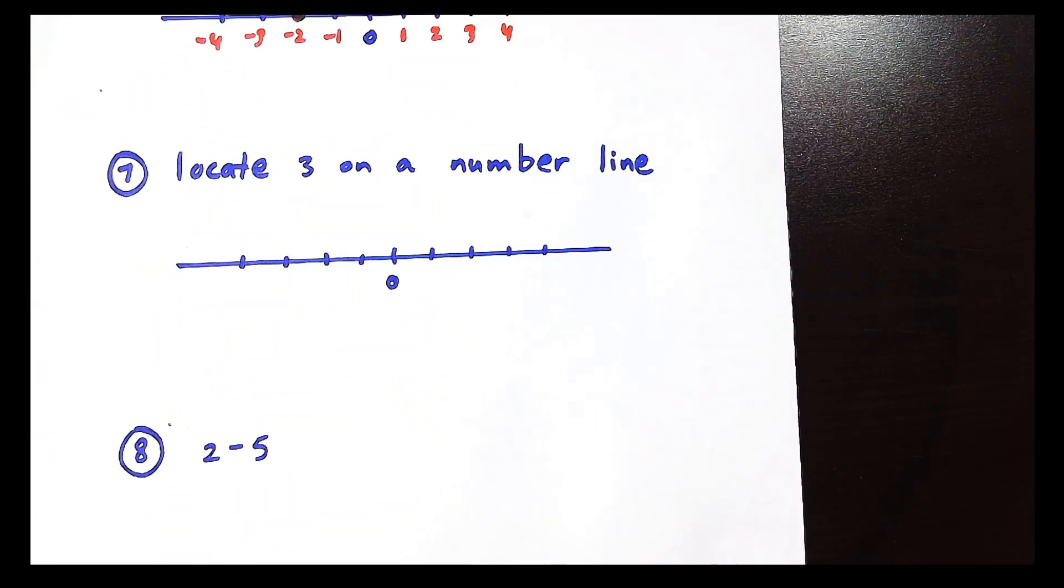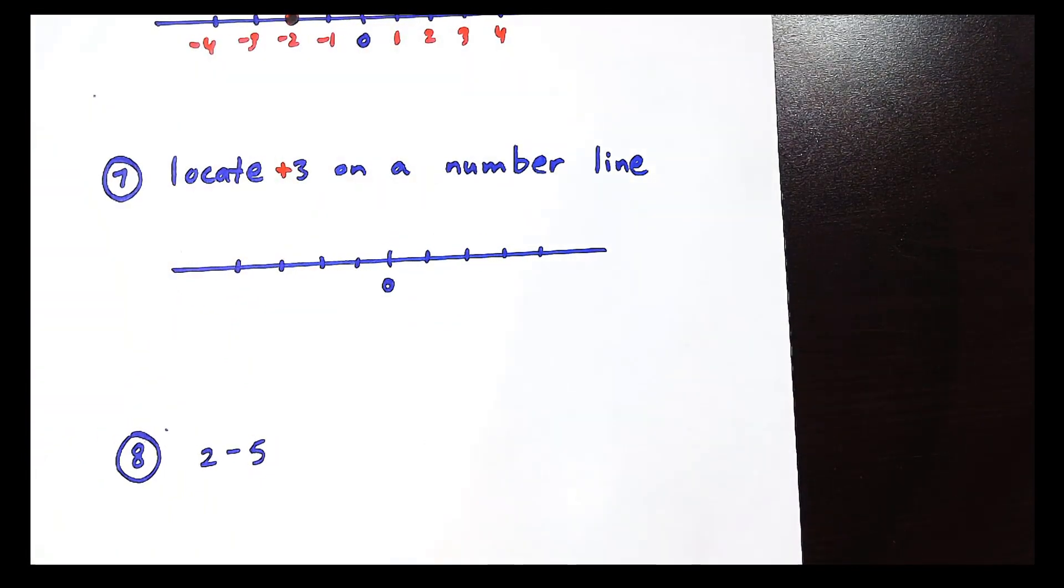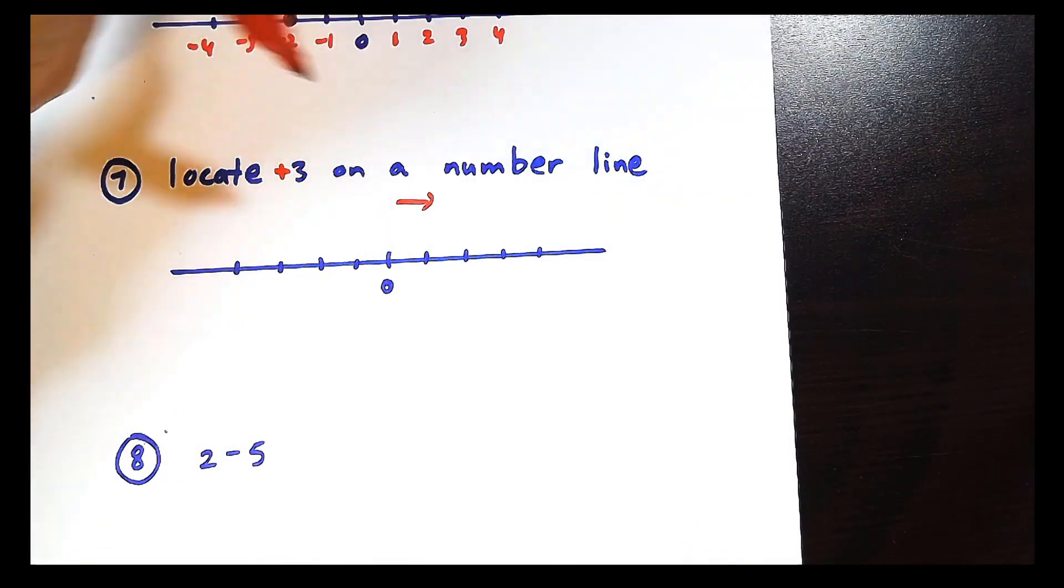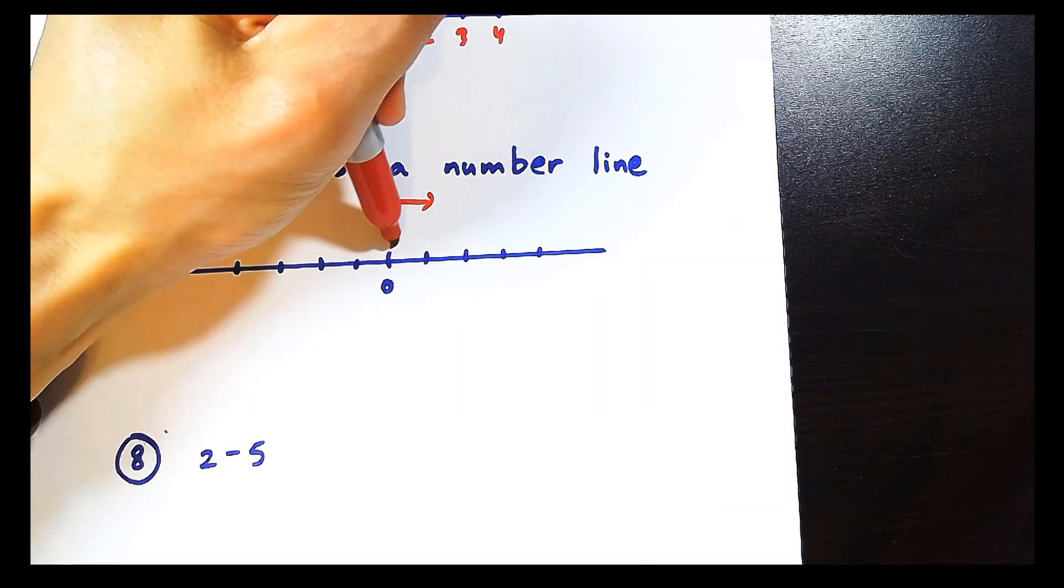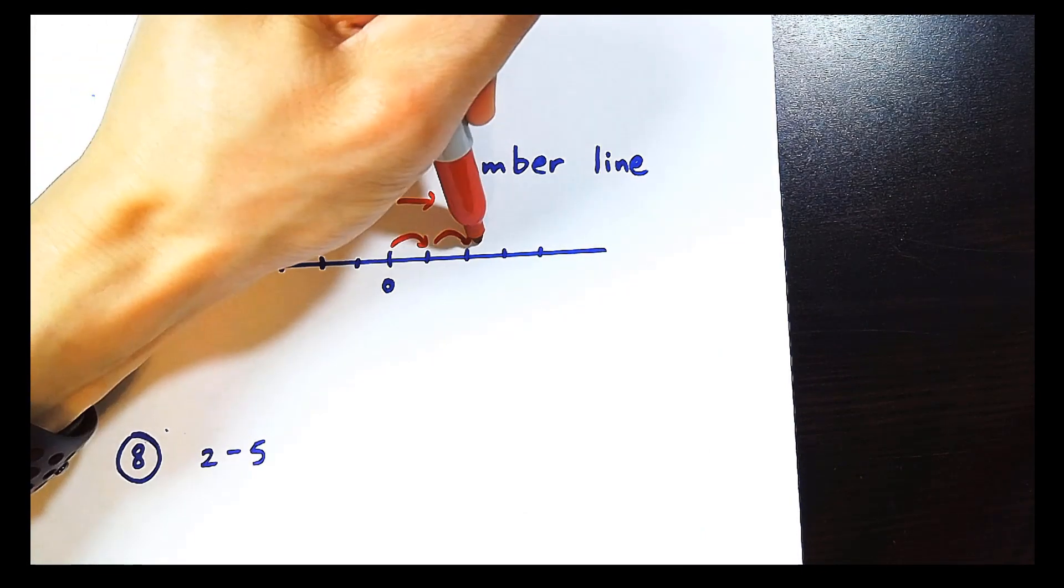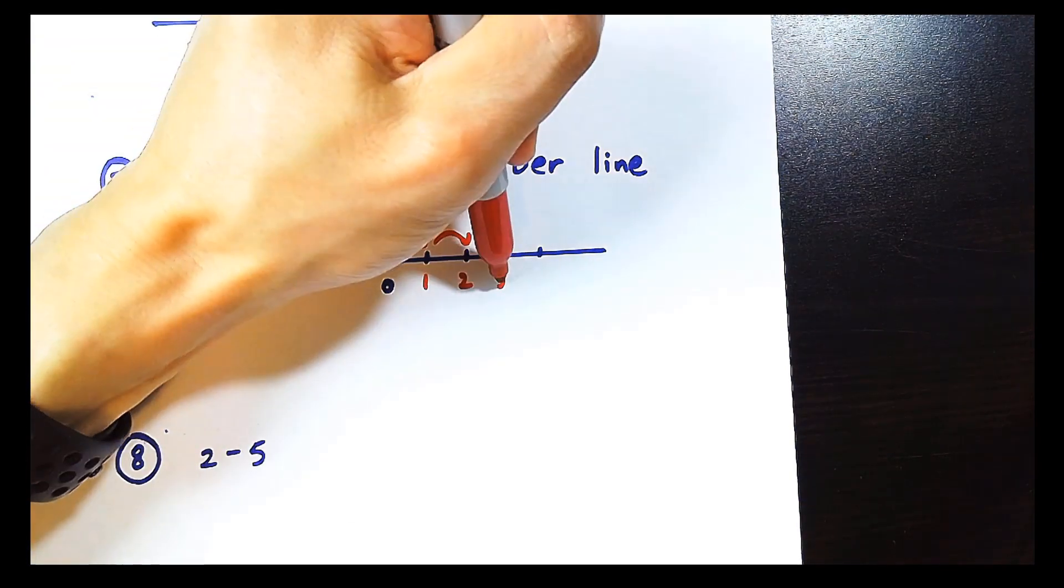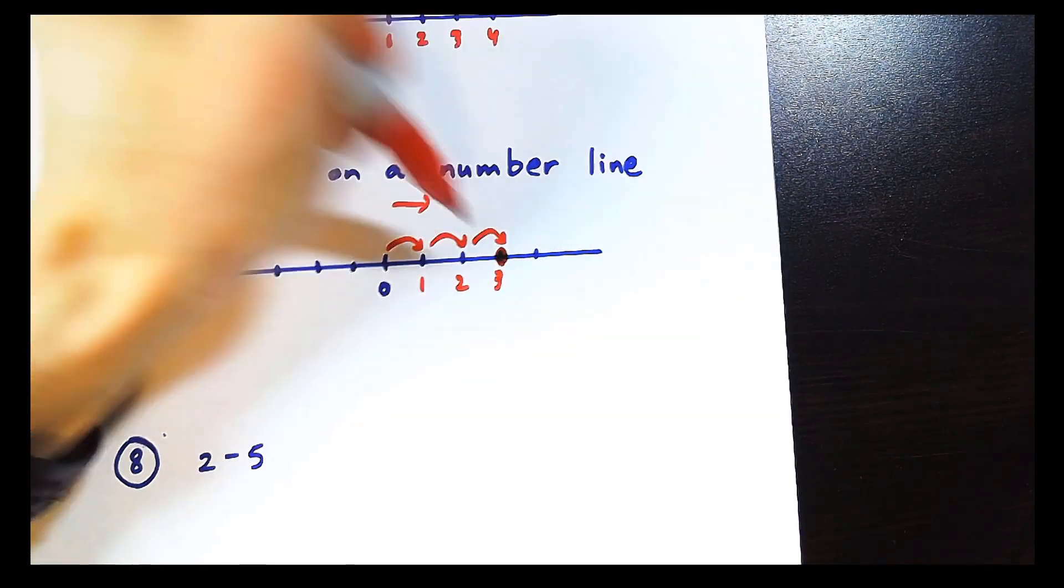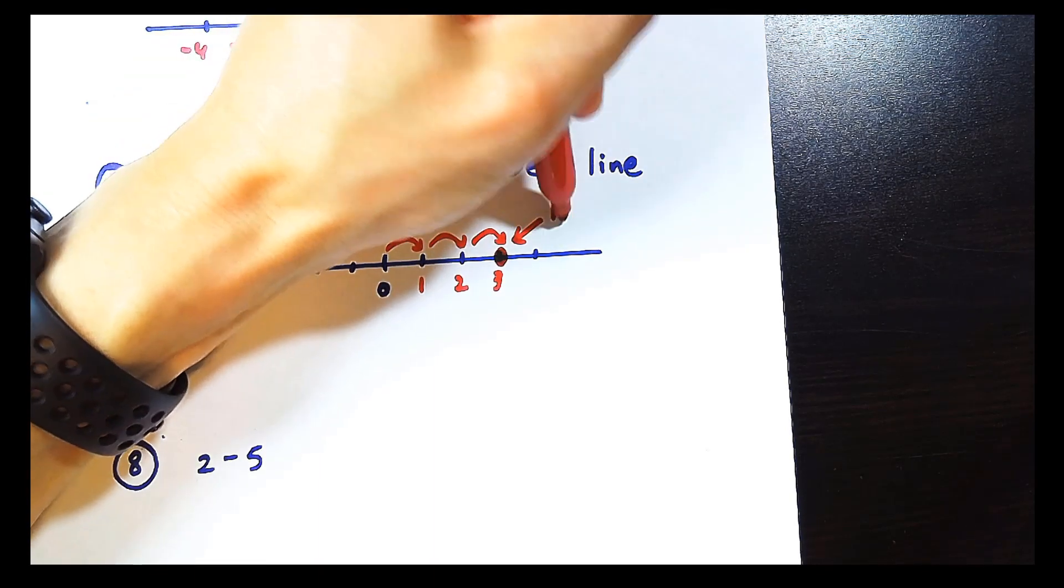Now we're going to locate 3 on a number line. The number 3 is the same thing as positive 3. So positive 3, not negative 3, is going to be to the right. So let's jump 3 times to the right. Nice integers. 1 hop, 2 hop, 3 hop. This is positive 1, positive 2, positive 3. So this is where we end up. In positive land. Here.